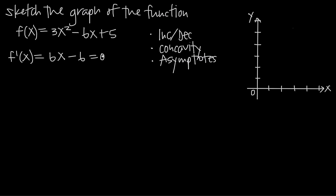We want to set this equal to 0 and solve for x. So we have 6x - 6 = 0. Adding 6 to both sides gives us 6x = 6, and dividing both sides by 6 gives us x = 1. So x = 1 is our potential critical point.